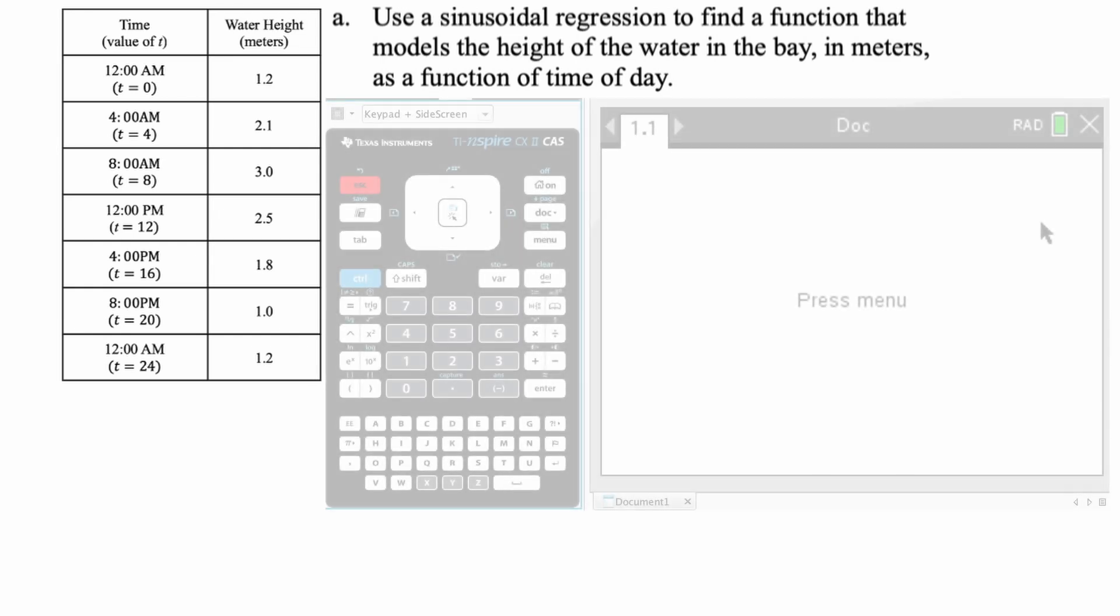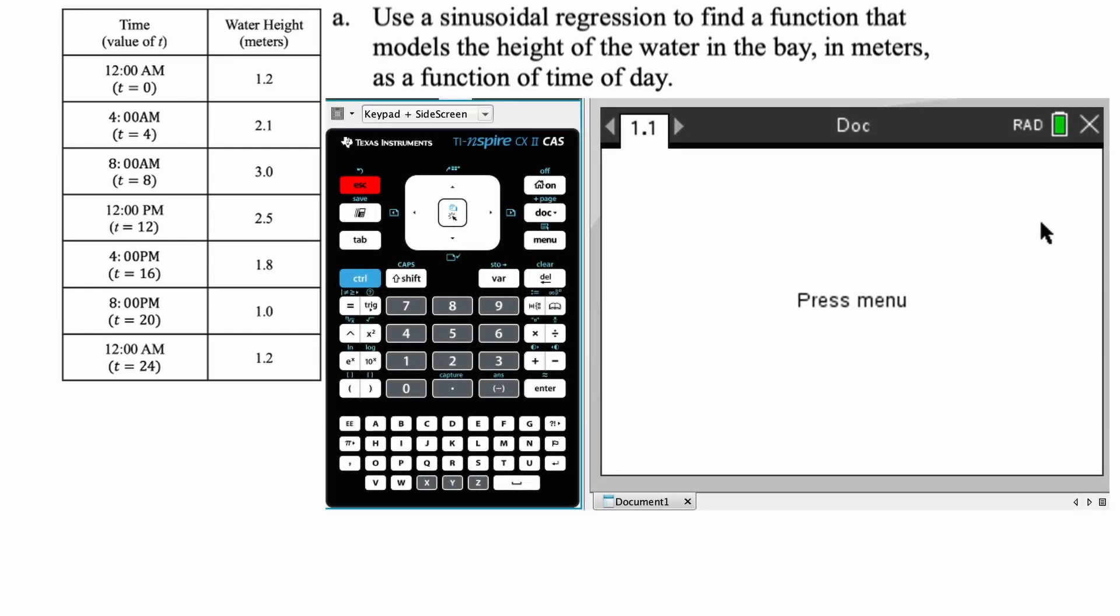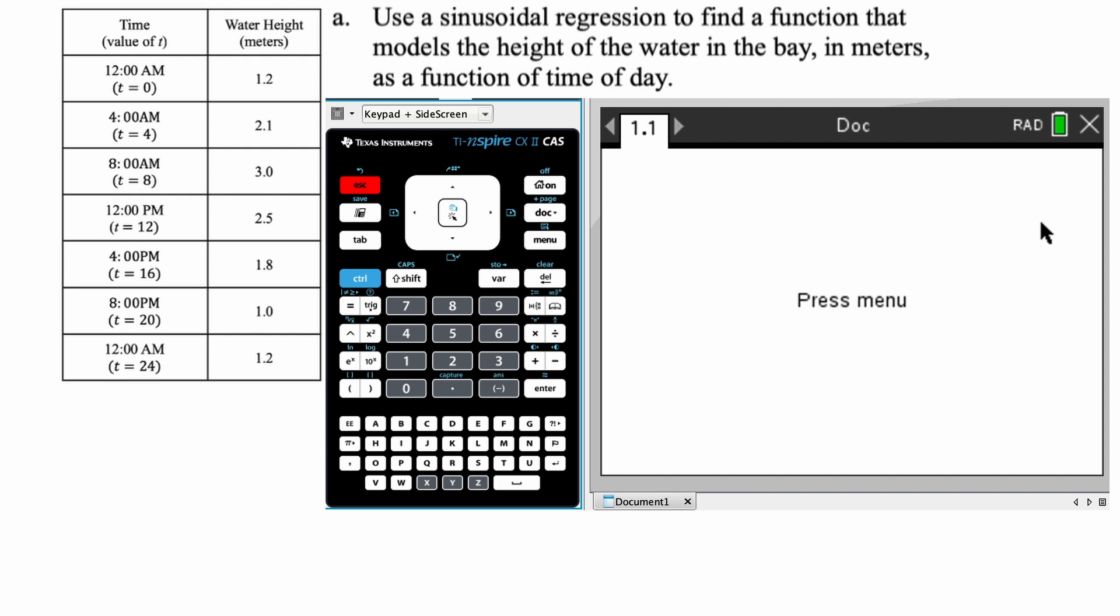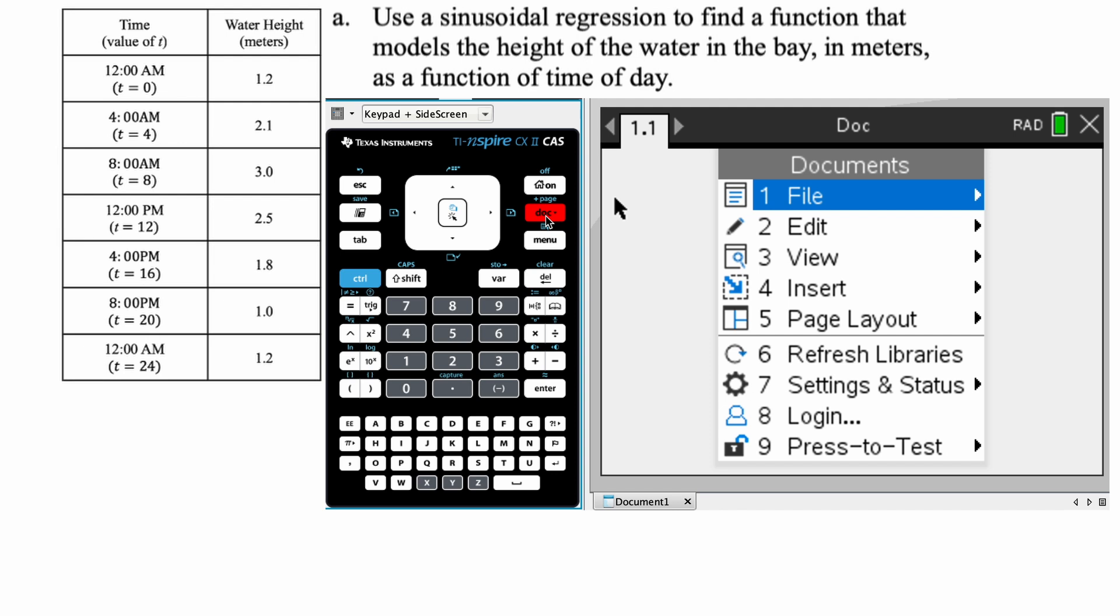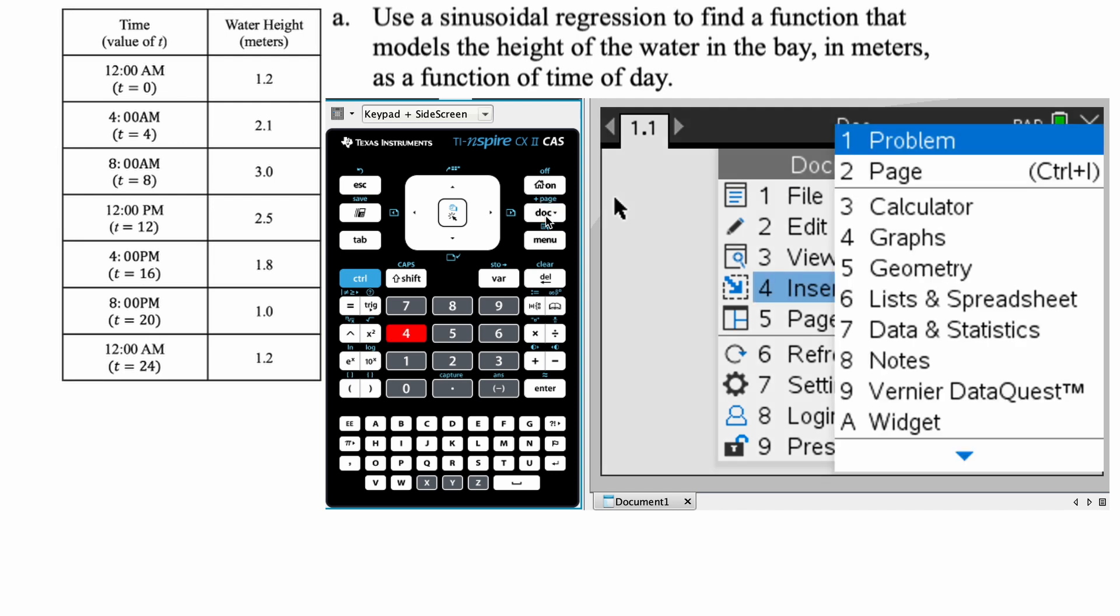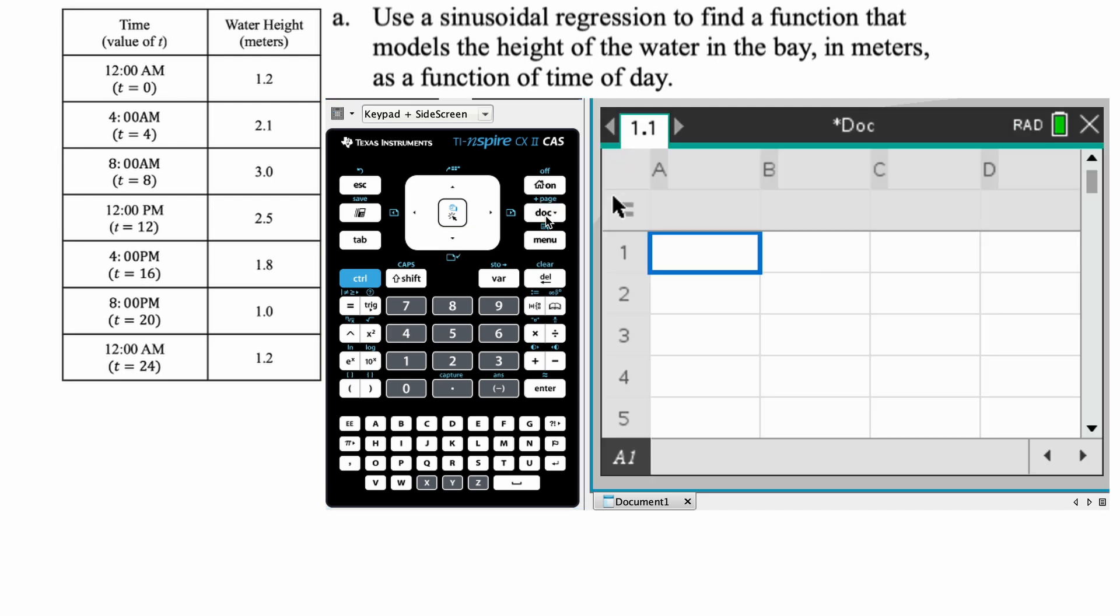Okay, so I'm going to switch over to the Inspire. I'm going to run through finding that regression equation. Okay, so the first thing I'm going to do here is I'm going to add in a list and spreadsheet. So I'm going to press doc and option 4 for insert, and then I want lists and spreadsheets. So we have this.